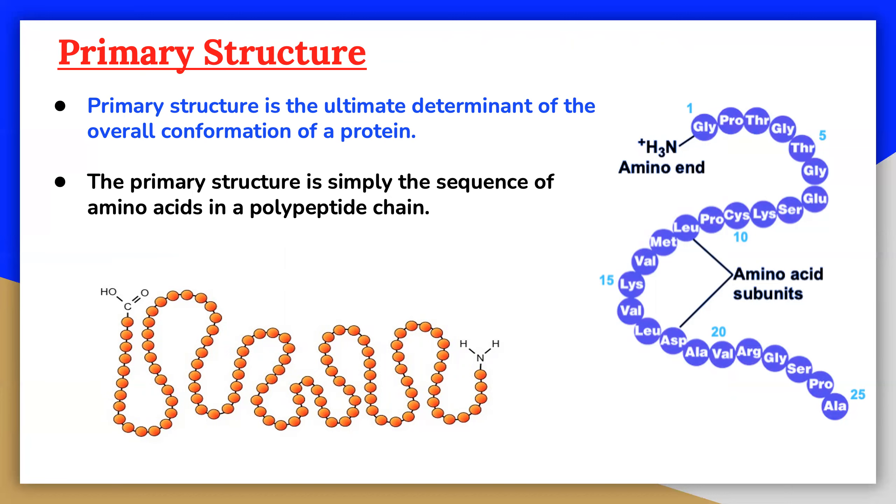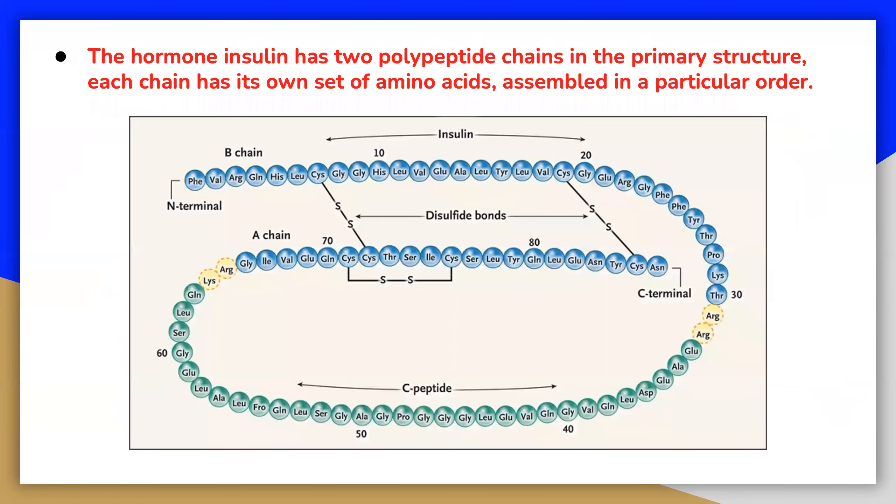The simplest level of protein structure, which is the primary structure, is simply the sequence of amino acids in a polypeptide chain. Let us take a very famous protein from the human body, the hormone insulin, which has two polypeptide chains in the primary structure. Each chain has its own set of amino acids assembled in a particular order.